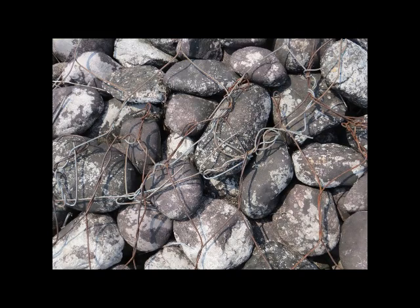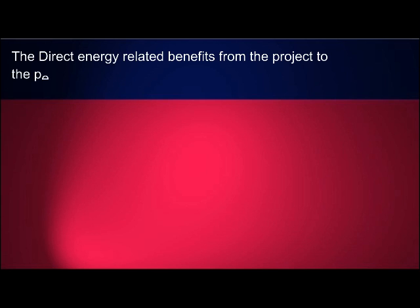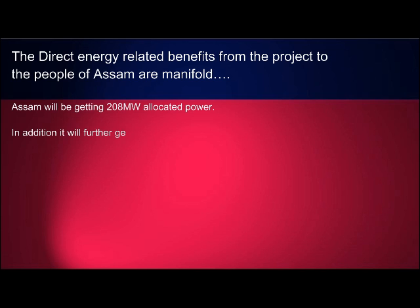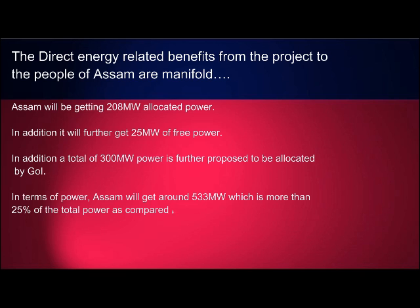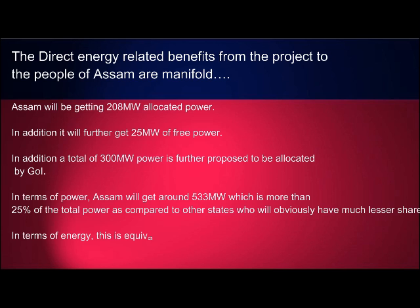Assam will be getting 208 megawatts of allocated power. In addition, it will further get 25 megawatts of free power. The total unallocated 300 megawatt power is further proposed to be allocated by the Government of India. In terms of energy, Assam will get around 533 megawatts, which is more than 25% of the total power, compared to other states who will obviously have a much lesser share.